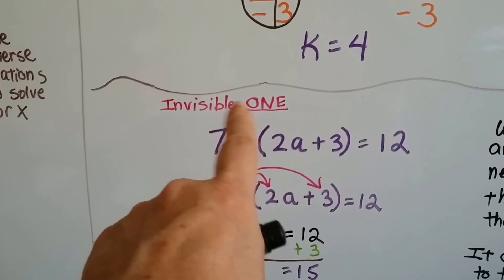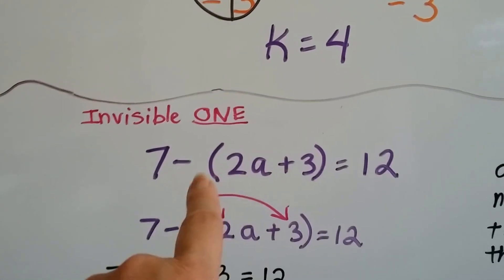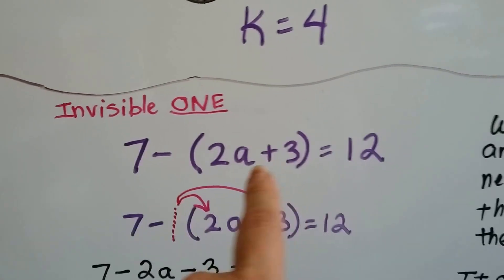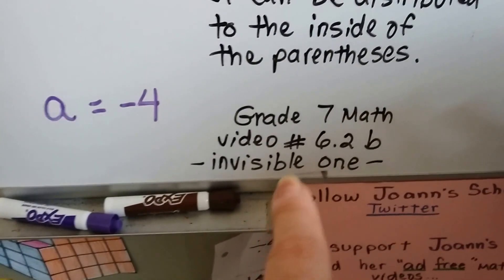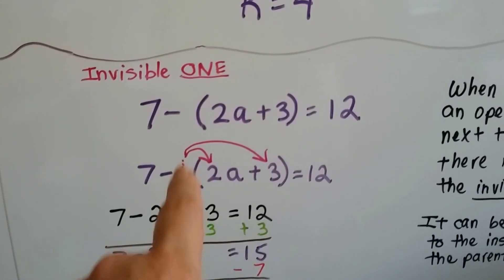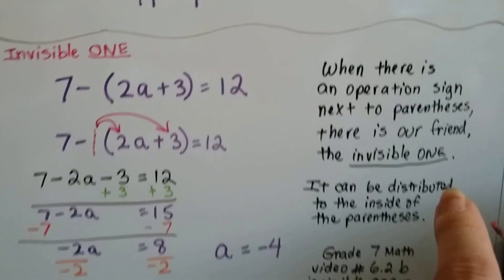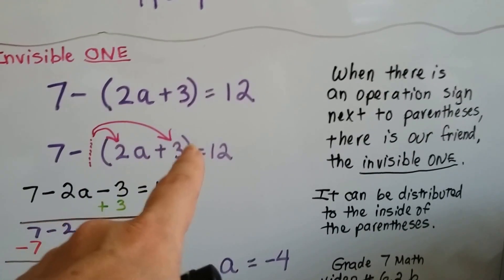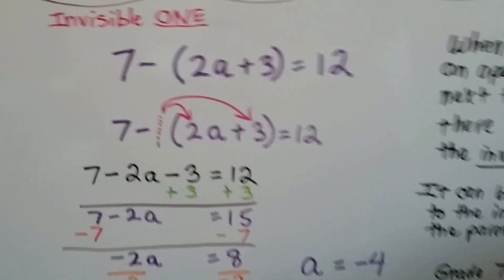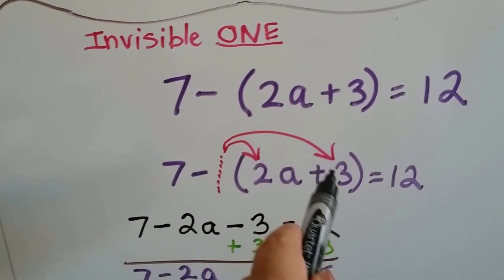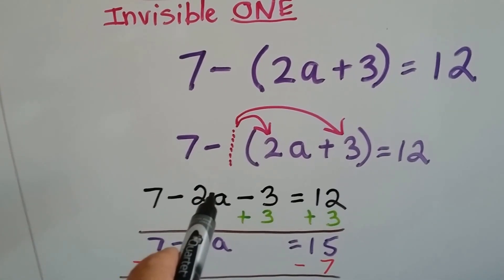Now there's one other thing I want to show you with the distributive property, and it has to do with our friend the invisible 1. Let's say our equation is 7 minus, and there's nothing there — just a minus sign and then parentheses. Actually, there is something there. If you saw the Grade 7 math video number 6.2b about the invisible 1, I mentioned this. There's actually an invisible negative 1 right in front of the parentheses. When there's an operation sign next to parentheses, the invisible 1 is there and can be distributed to each term inside. So it's negative 1 times 2a and negative 1 times positive 3.